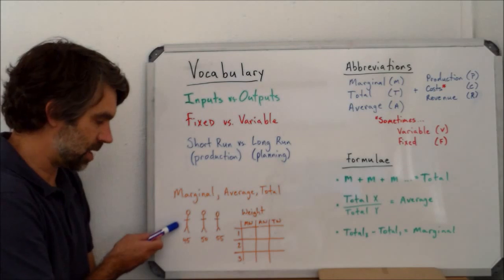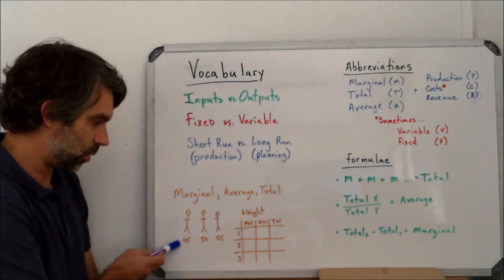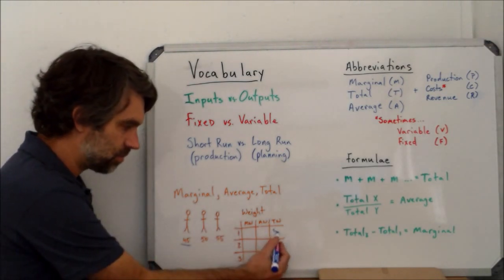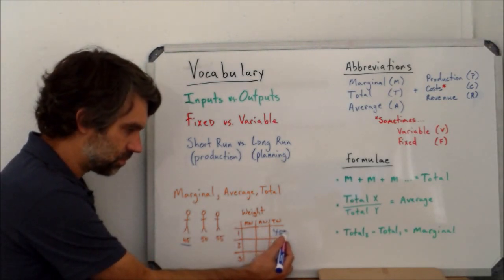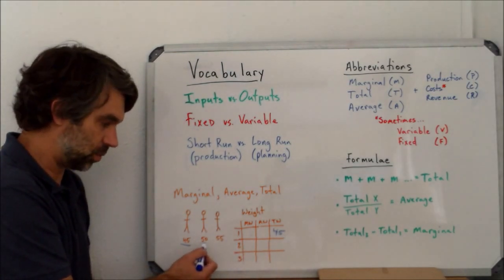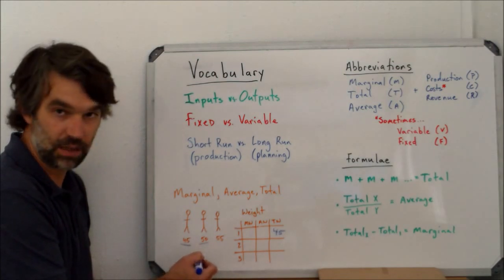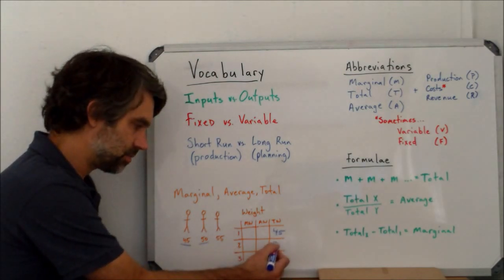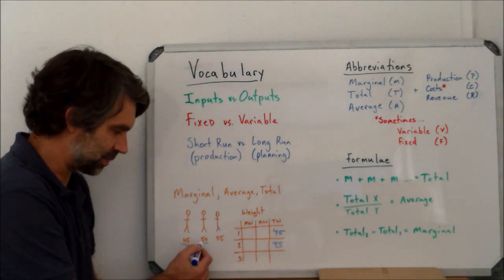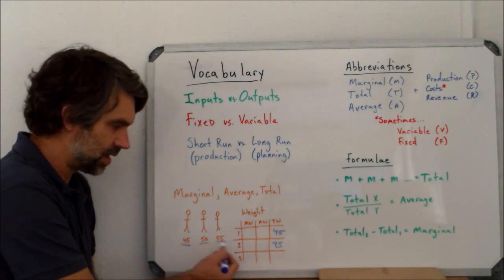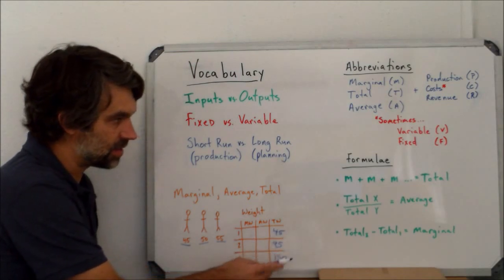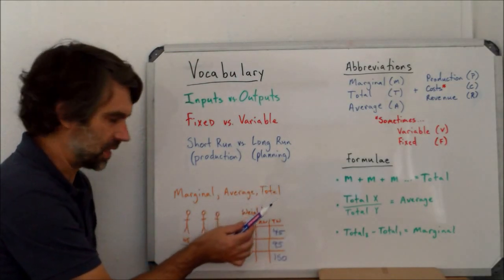This is person number one: 45. So I'm only looking at person number one, so right now the total weight is 45. Now I'm going to bring in the second person. So now the total weight of the two together is 45 plus 50, so 95. Then I'm going to bring in the third person, so now it's 45 plus 50 plus 55, and of course the total here is 150.